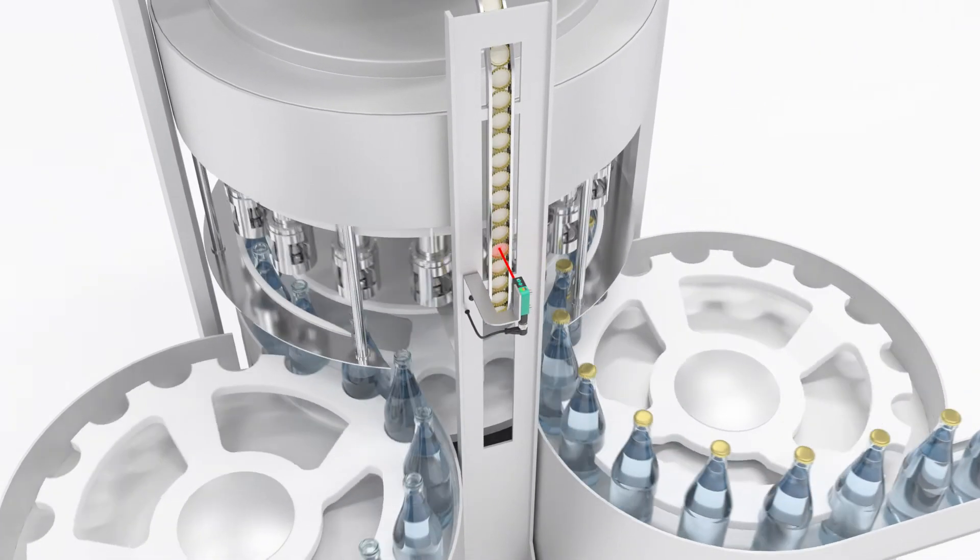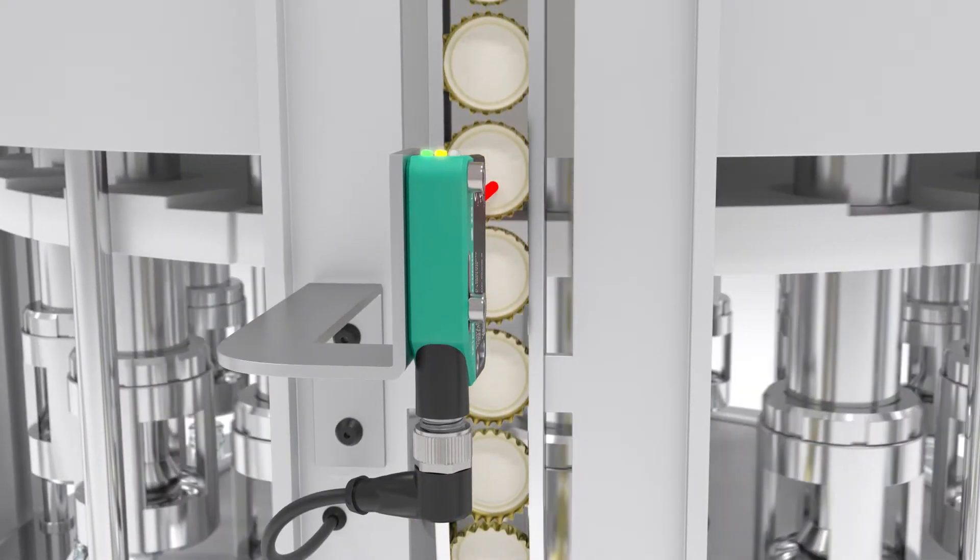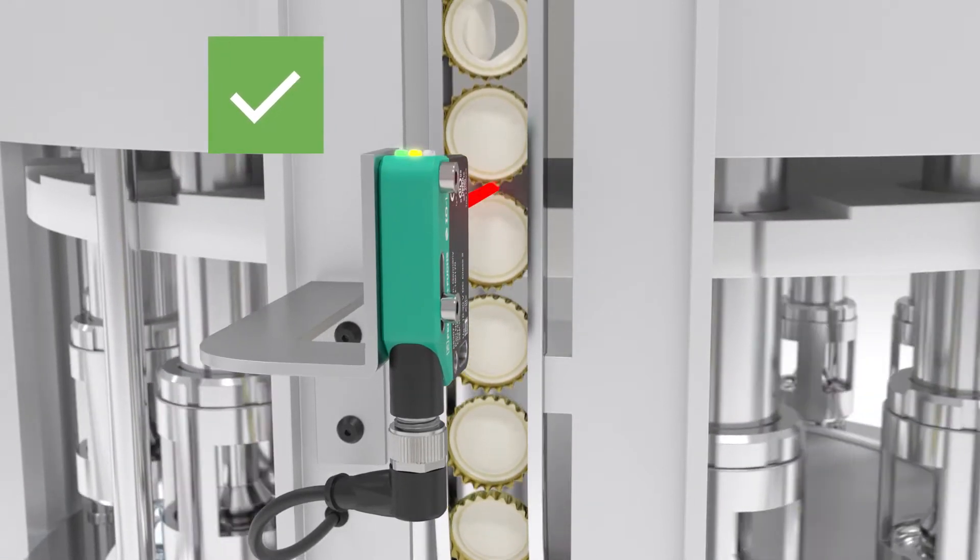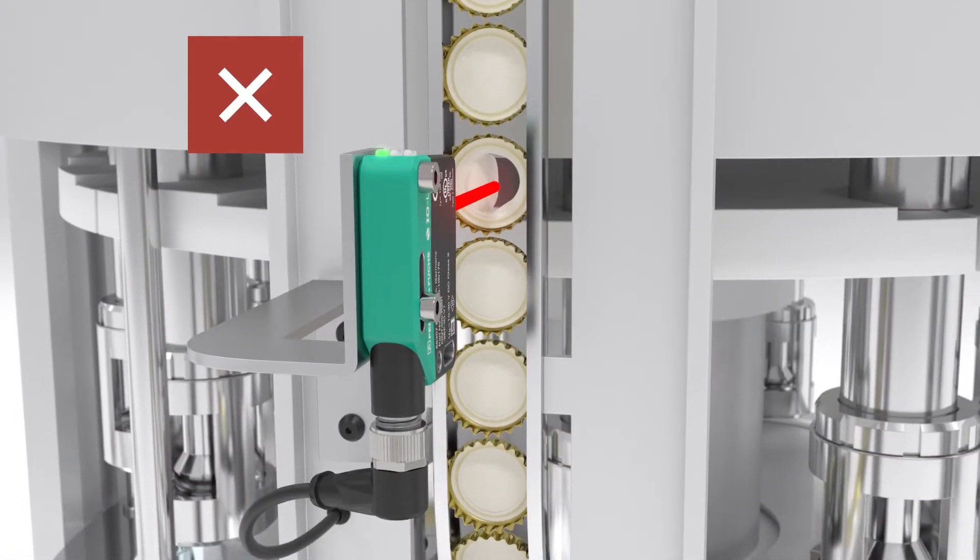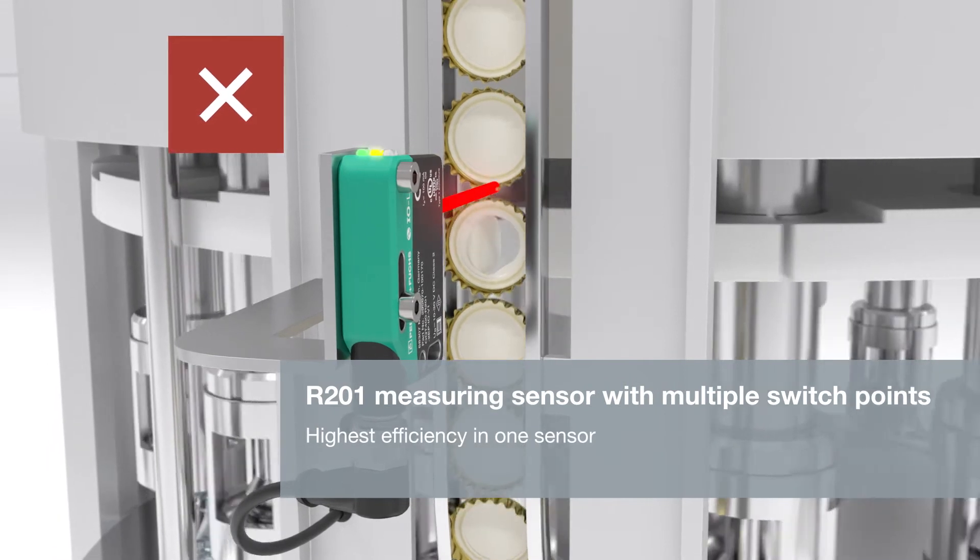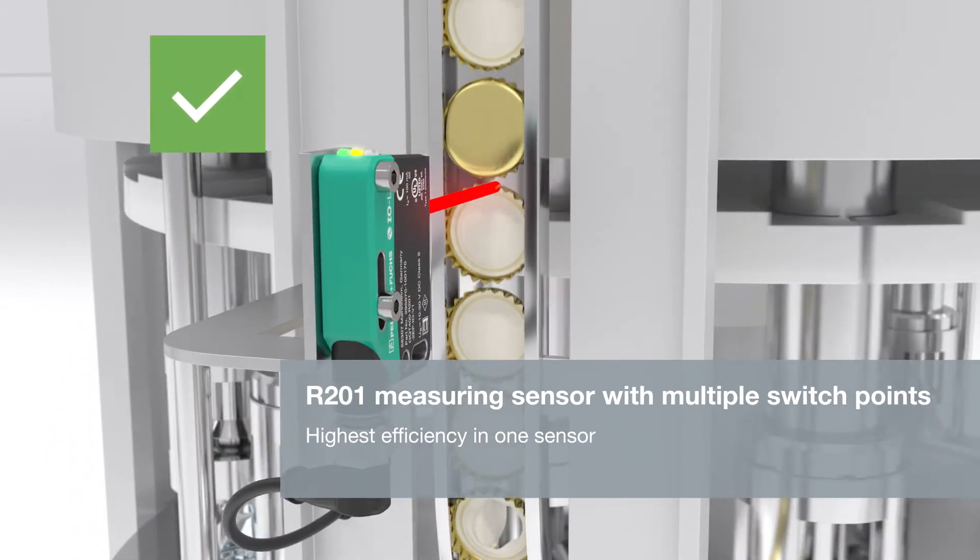Thanks to multi-pixel technology, the R201 measuring sensors with multiple switchpoints and standard housing designs recognize damaged and incorrectly positioned caps in the feeding process.